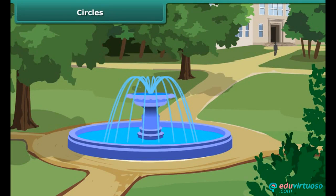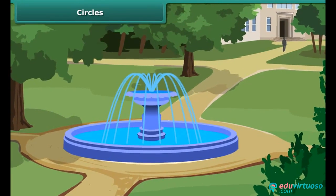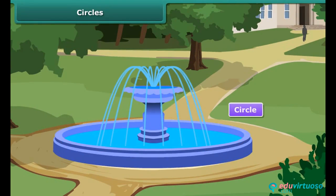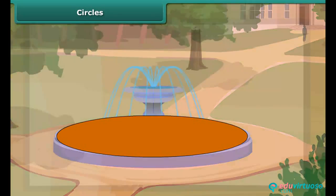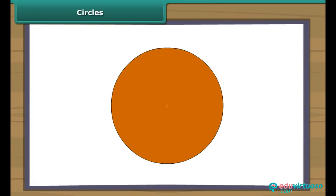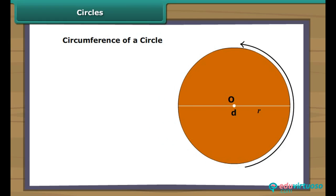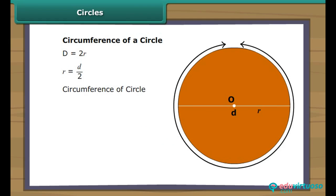Circles. Students, have you noticed the shape of the fountain? The fountain is in the shape of a circle. Can you measure the circumference of the circle? Yes. If you know the radius of the circle, then by using the formula of circumference of a circle: the circumference of a circle is the distance around a circular region, in other words, the boundary of the circle. The circumference of a circle is the product of a constant called pi and its diameter, or twice the product of pi and the radius of the circle.